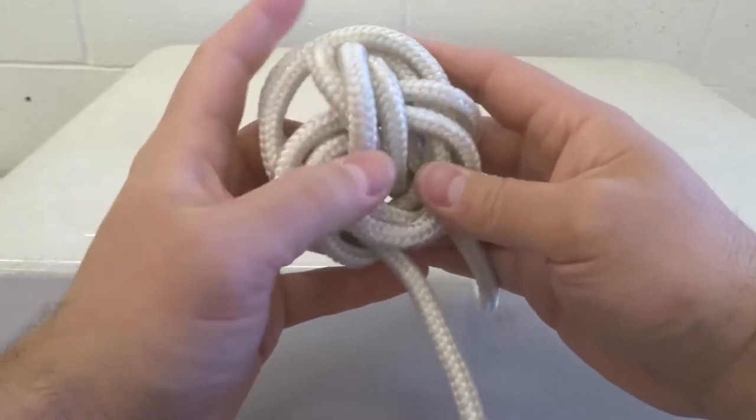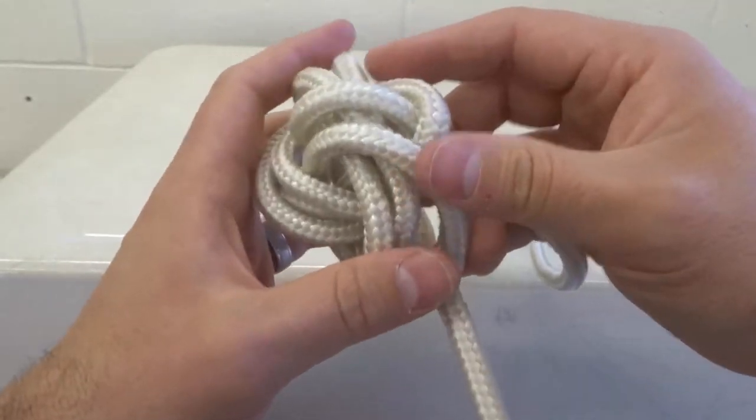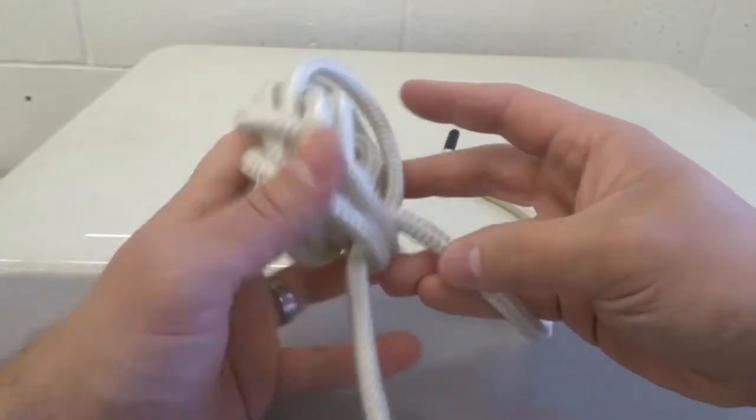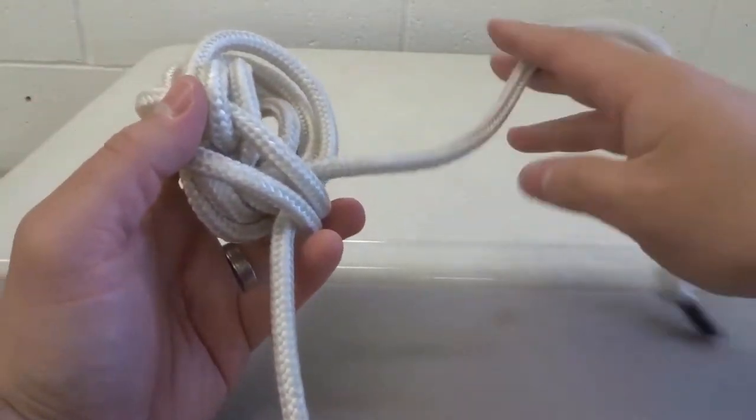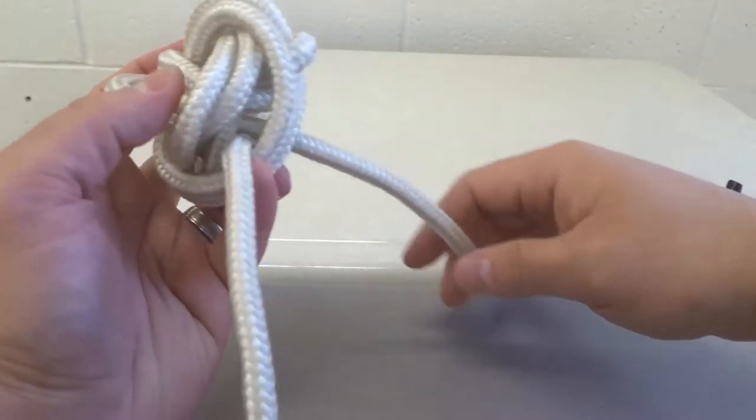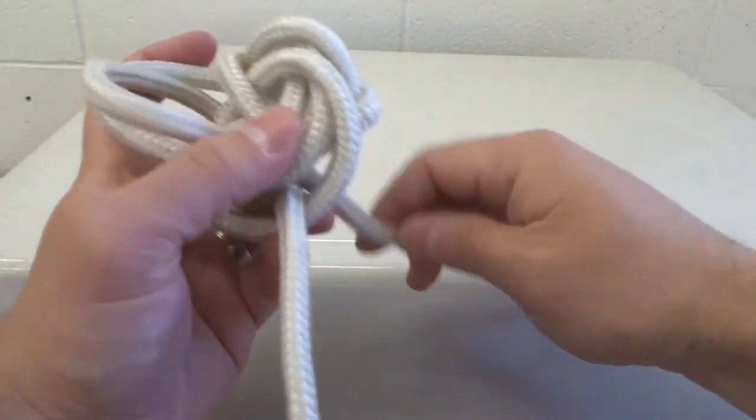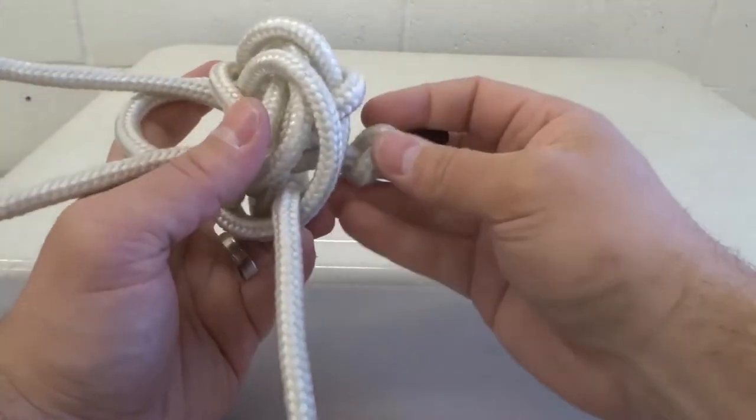So now we're gonna do next is we have to actually tighten it up. This is what the monkey's fist looks like before you tighten it up. To tighten it up I want to bring this end close to the inside right over here.